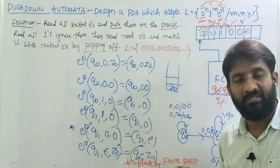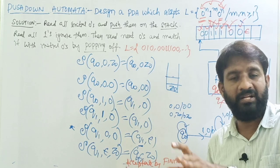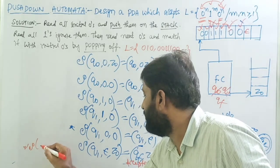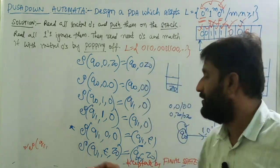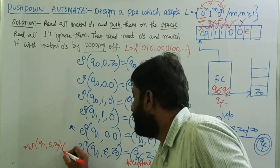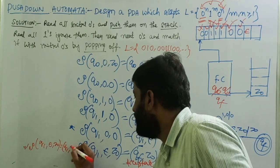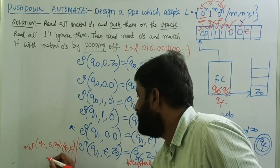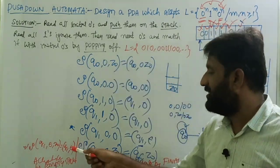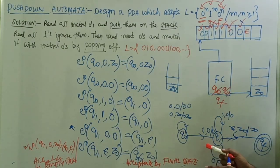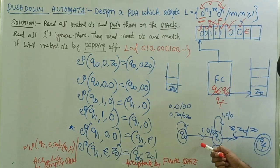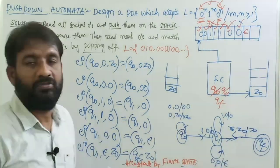The same design can be modified to accept by empty stack. You need to add only one transition: transition of q1, epsilon, Z-naught → q1, epsilon — removing Z-naught from the stack so the machine accepts by empty stack. This transition is not added to the graphical notation in order to preserve the deterministic nature of the pushdown automata, since adding it may introduce non-determinism.